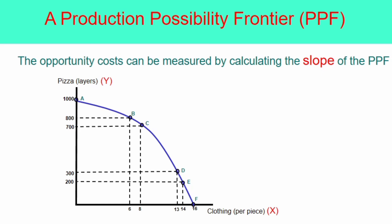How about the slope at points D and E? Again, using the formula, the slope is equal to, from D to E, the slope is equal to negative 100. Again, the intuition behind this figure is that, the only way for the firm to increase the production of clothing by 1 unit is to decrease the production of pizza by 100 units, or vice versa.